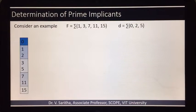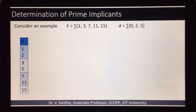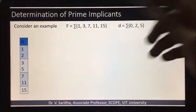The first step is to group them based on the number of ones in its corresponding binary representation. Include both min terms and also don't care conditions and group them accordingly.